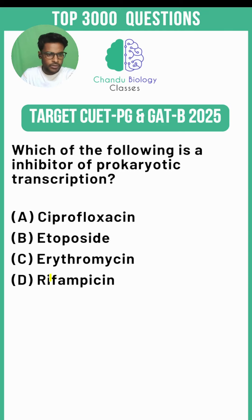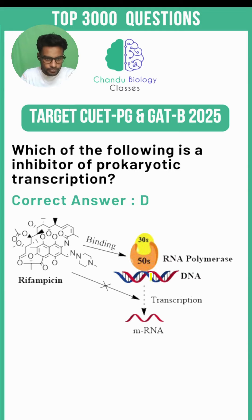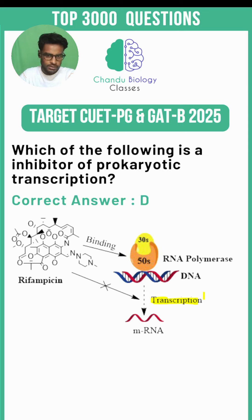The correct answer would be Option D. Rifampicin works by binding to RNA polymerase in bacteria, specifically inhibiting its ability to synthesize RNA. This action effectively blocks transcription initiation and elongation, making it an important antibiotic used to treat bacterial infections, including tuberculosis.